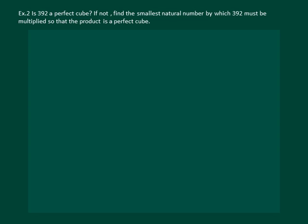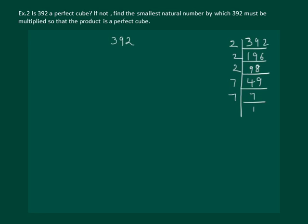Let us read the question. Is 392 a perfect cube? If not, find the smallest natural number by which 392 must be multiplied so that the product is a perfect cube. We have to find firstly whether 392 is a perfect cube. For that we need to prime factorize 392.